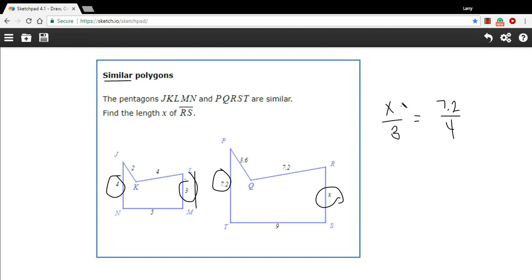And we can now solve for x by cross-multiplying. When you have a proportion like this, you can multiply diagonally down, diagonally up, and set those two values equal to each other. So x times 4 would be 4x. And 3 times 7.2 is going to be 21.6.